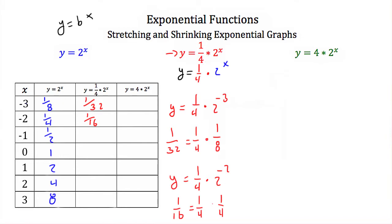So if I take 1 half and I multiply it by 1 fourth, I'm going to get 1 eighth. If I take 1 and multiply it by 1 fourth, I'm going to get 1 fourth. Take 2 and multiply it by 1 fourth, and I'll get 1 half. 4 multiplied by 1 fourth is just 1, and 8 multiplied by 1 fourth is 2. So now I have all of my y values for y is equal to 1 fourth times 2 to the x.